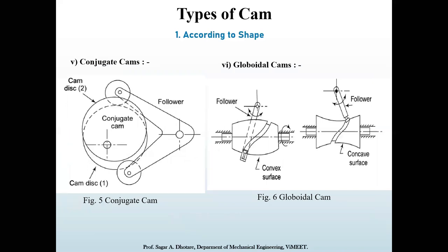The fifth type is the conjugate cam. A conjugate cam is a double disc cam — the two discs being keyed together and in constant touch with two rollers of the follower. Thus the follower has a positive constraint. Such a cam is preferable when the requirements are low wear, low noise, better control of the follower, high speed, and high dynamic loads. Where accuracy with high speed, high loads, noiseless operation, or vibration-less operation is required, we can use such cams.